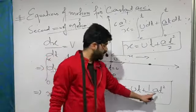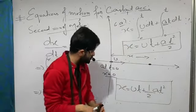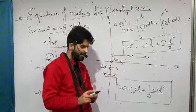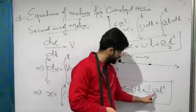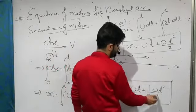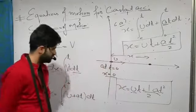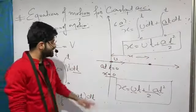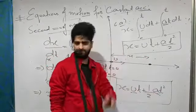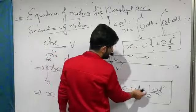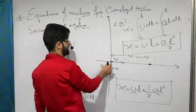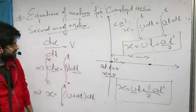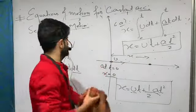What is u? The initial velocity of the particle. What is a? The acceleration of the particle. Again, apply proper sign convention: if initial velocity is rightward, u is positive; if leftward, u is negative. Similarly for acceleration. This equation x = ut + ½at² was derived for a particle starting from the origin.